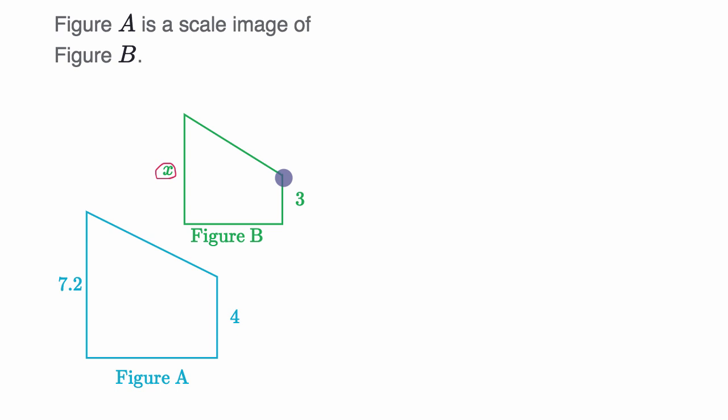We can see when you go from this side right over here, it corresponds to this side. It's the shorter side that forms a right angle with the base. This is the longer side that forms a right angle with the base. And so you could set up some ratios. The ratio of three to four is going to be the same thing as the ratio of X to 7.2.